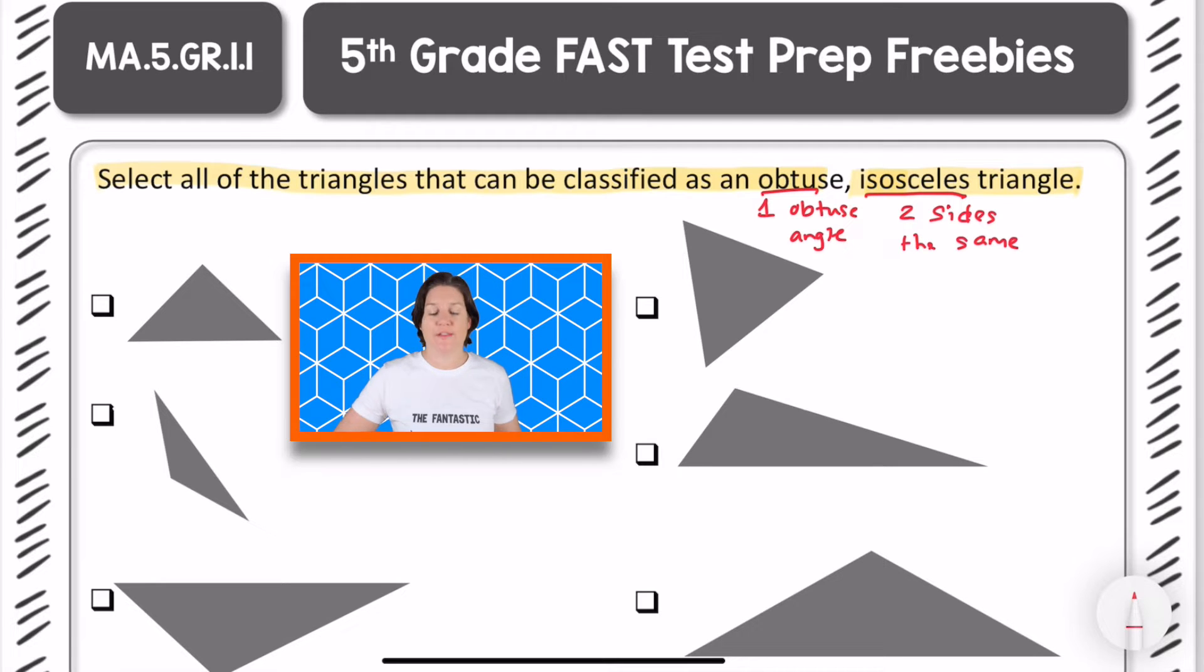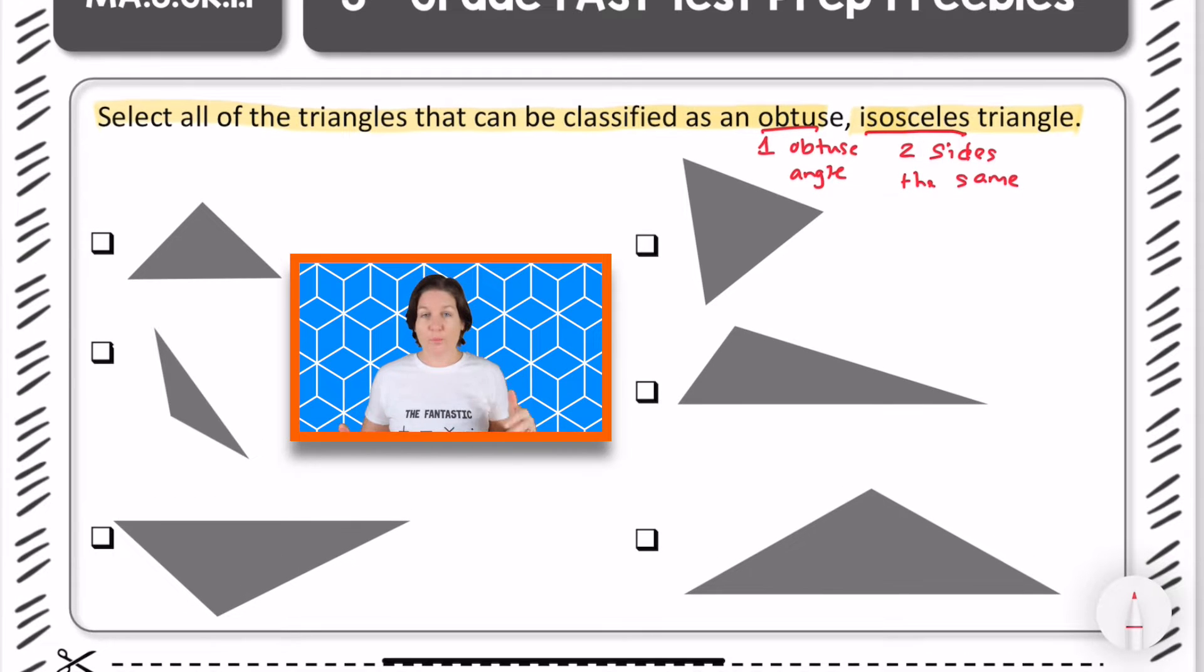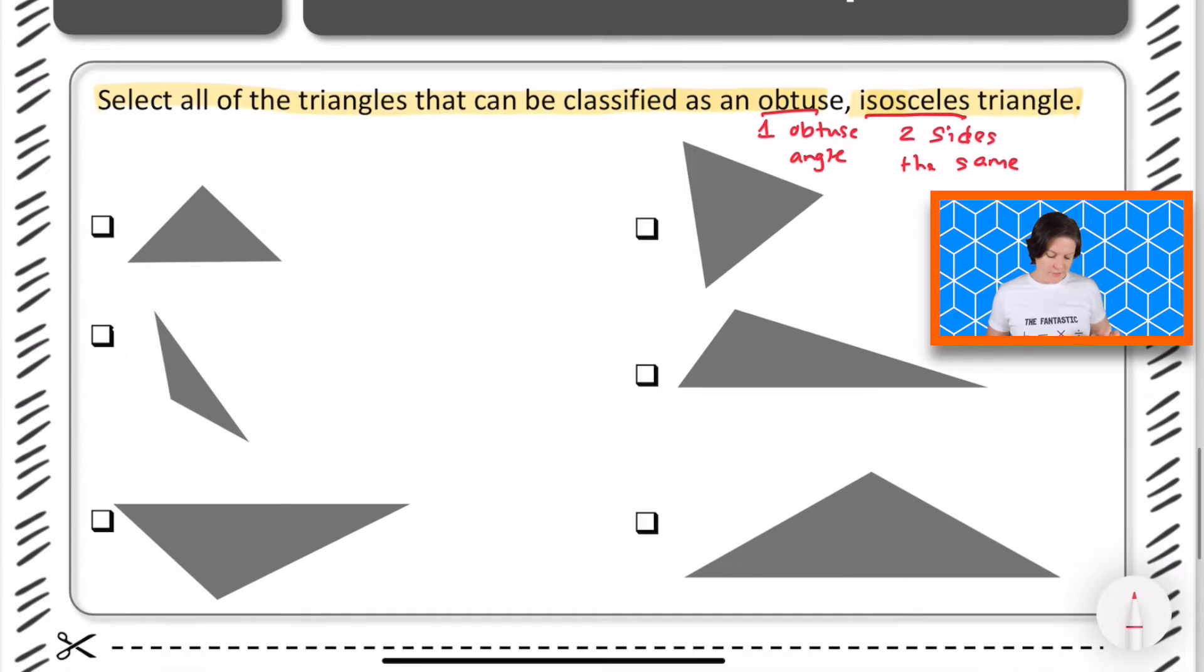That's isosceles. Two sides that are equal in length, the same size. By the way, I'm going to go ahead and link a geometry song that I have for this to help you remember what does obtuse mean, what's isosceles and all about triangles. So I'll include that just in case you need a review. All right, so let's go over this.